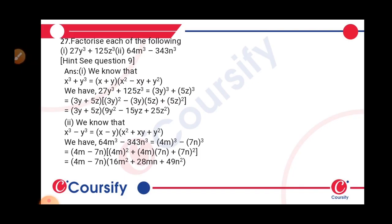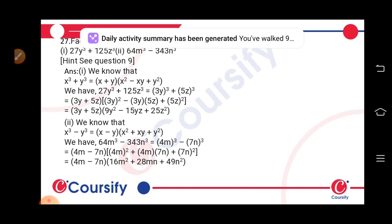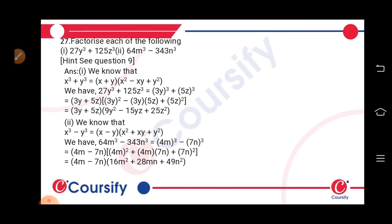Our next question is: factorize each of the following. The first question is 27y cube. We know that x cube plus y cube is equal to x plus y into x square minus xy plus y square — that is an identity. So 27y cube plus 125z cube is of the form x cube plus y cube.